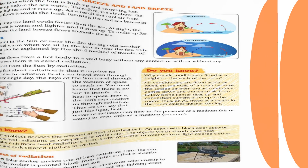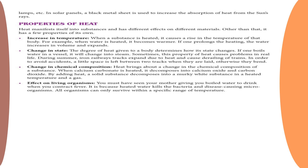Properties of heat: First, increase in temperature — when a substance is heated, its temperature rises. For example, when water is heated it becomes warmer and eventually increases in volume and expands. Second, change in state — the degree of heat determines how a substance's state changes; for example, boiling water turns into steam. In real life, iron railway tracks expand due to heat in summer, so a small space is left between tracks when they are laid to prevent accidents.